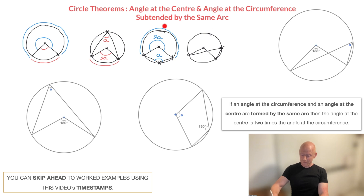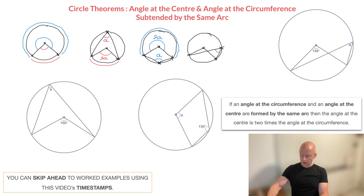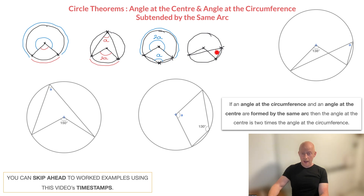Now this third configuration looks quite different to the previous two, but in fact we're still dealing with the same setup: we have an angle at the circumference — that's this angle right here — and we have an angle at the center. The question is which angle at the center do we need to work with? To answer that, we need to ask which arc is subtending this angle at the circumference.